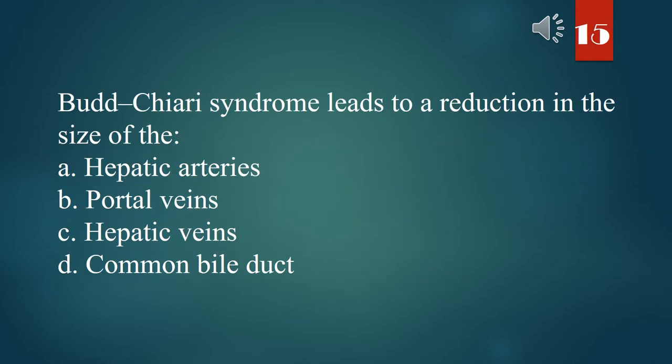Budd-Chiari syndrome leads to a reduction in the size of the: A. Hepatic arteries. B. Portal veins. C. Hepatic veins. D. Common bile duct. The answer is C. Hepatic veins.